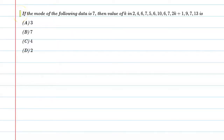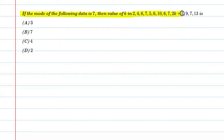Hello students, let's solve this question. If the mode of the following data is 7, the value of k in 2, 4, 6, 7, 5, 6, 10, 6, 7, 2k plus 1, 9, 7, 13 is?